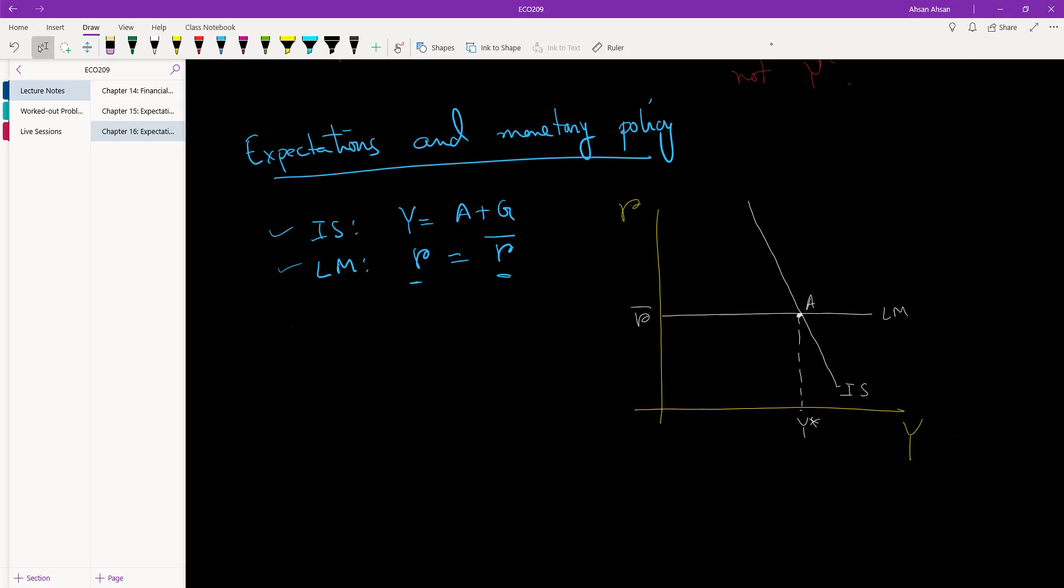Now suppose what the government does is it reduces the policy rate. Let's go to the same example. The central bank reduces the policy rate from R bar to let's say R star. So we end up here at LM. This is L star.